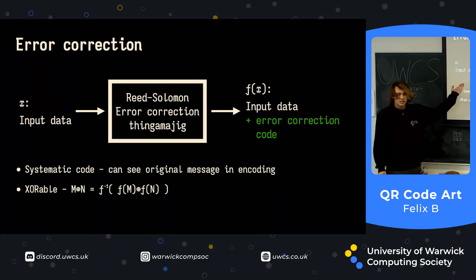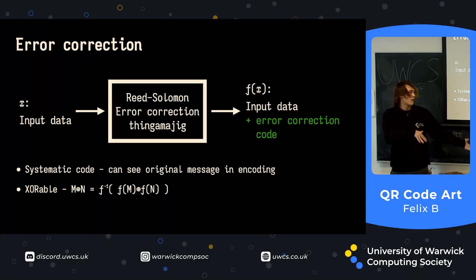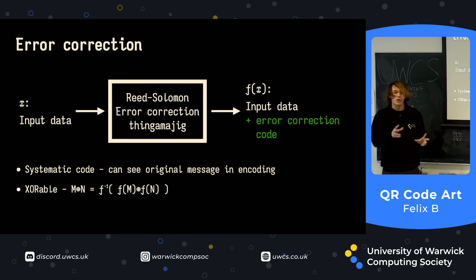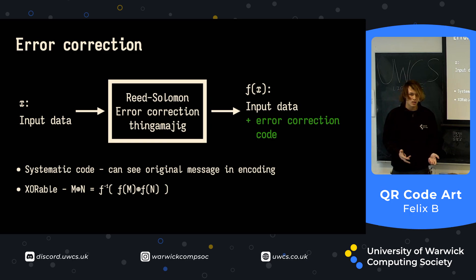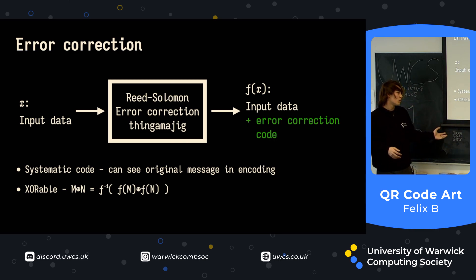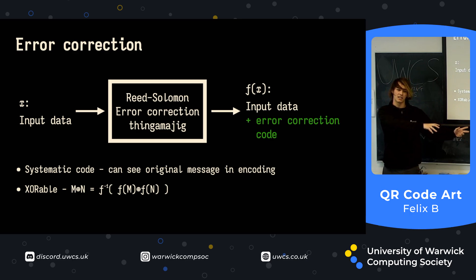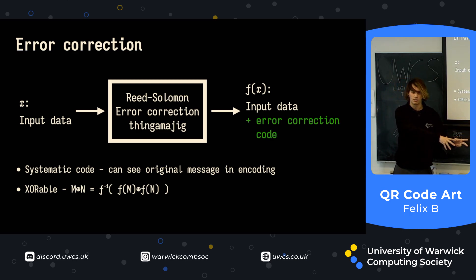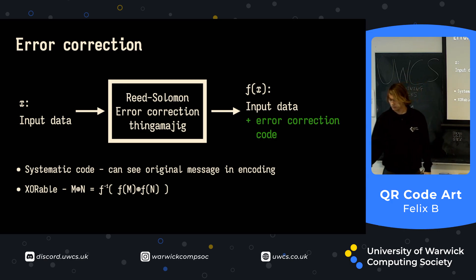We have some input data, we feed it into our Reed-Solomon error correction machine, and what we get out is our input data with an error correction code appended to the end. So it's what's called a systematic code — you can see the original message in the encoded message. It's just got the error correction code appended to the end. Another good property is that it's XORable: if we take two messages we want to encode and XOR them, then do the Reed-Solomon error correcting, it's the same as doing the error correcting first and then XORing the output messages. Which is a really cool property.